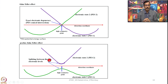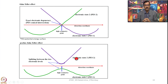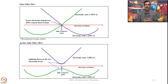You can see here splitting between the two electronic levels — this is the high symmetry point, and electronic state 2 and electronic state 1 are shown similarly. You can observe pseudo Jahn-Teller distortion, regular Jahn-Teller distortion, and also the second order effect. This is because of the excited state in which uneven occupation of electrons is observed.